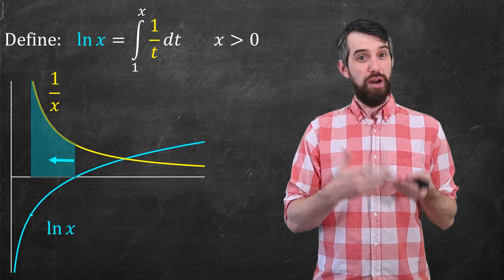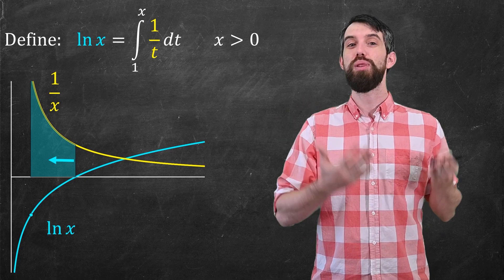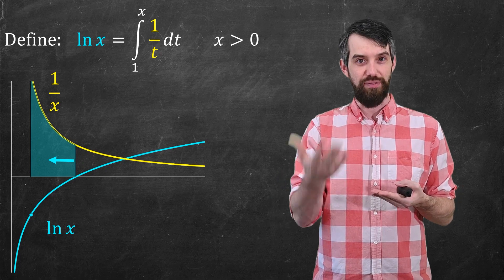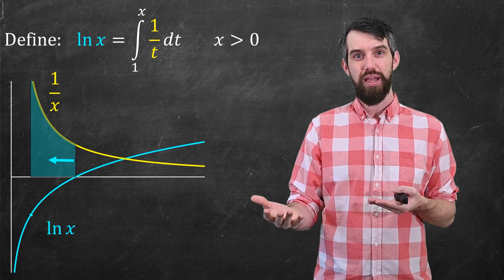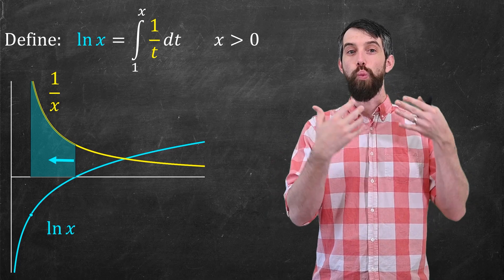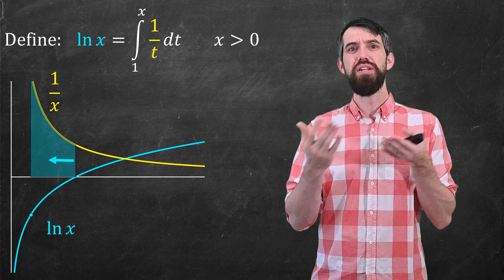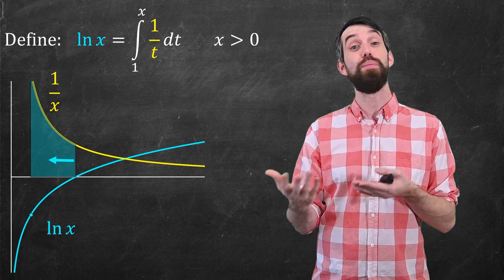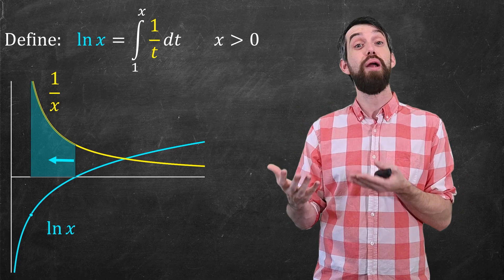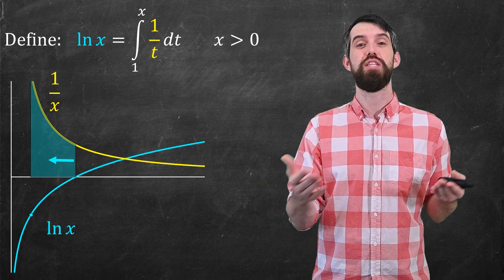I also really like this definition because it's something we can do approximations for. If you want to know what logarithm of 72 is, it's the integral from 1 up to 72 of 1 over t dt. Because integration can be well approximated numerically — and indeed the definition of integration was a limit of approximations — there is a nice way to numerically approximate the logarithm of any value using this particular definition.